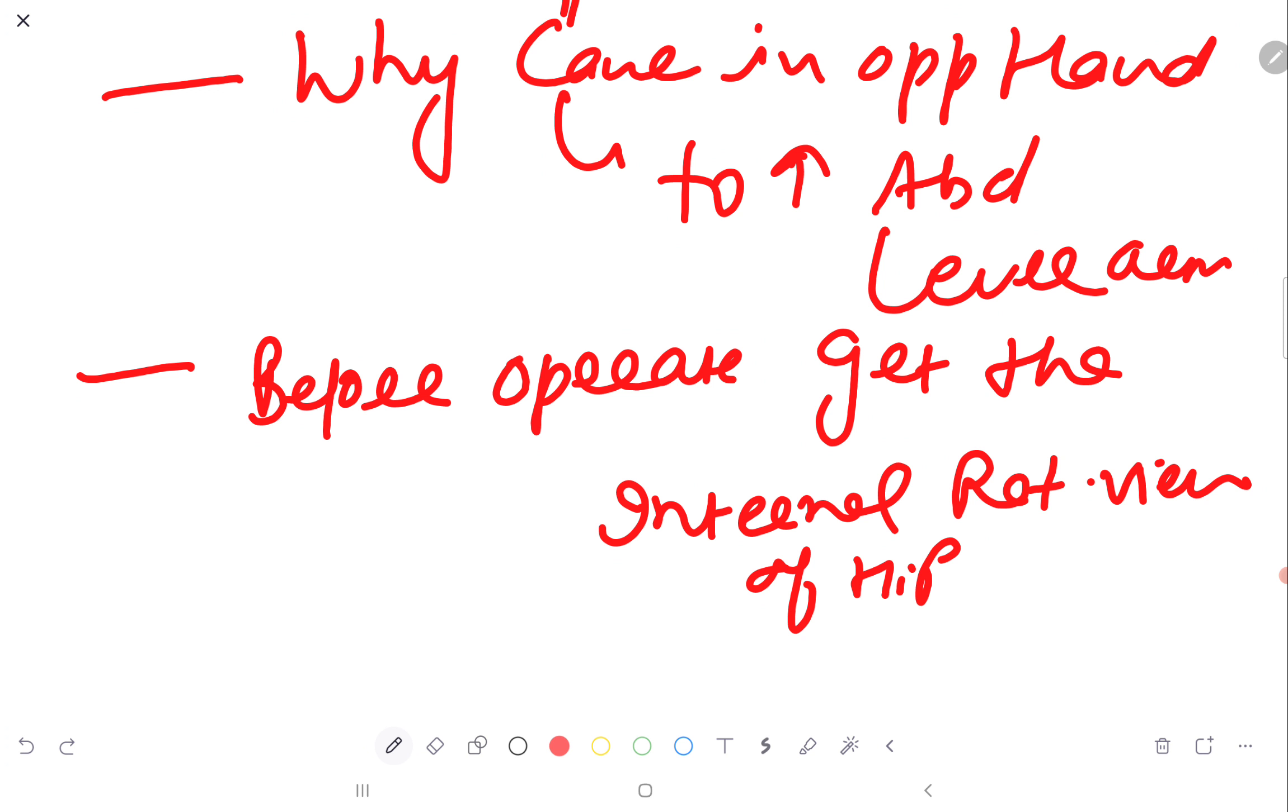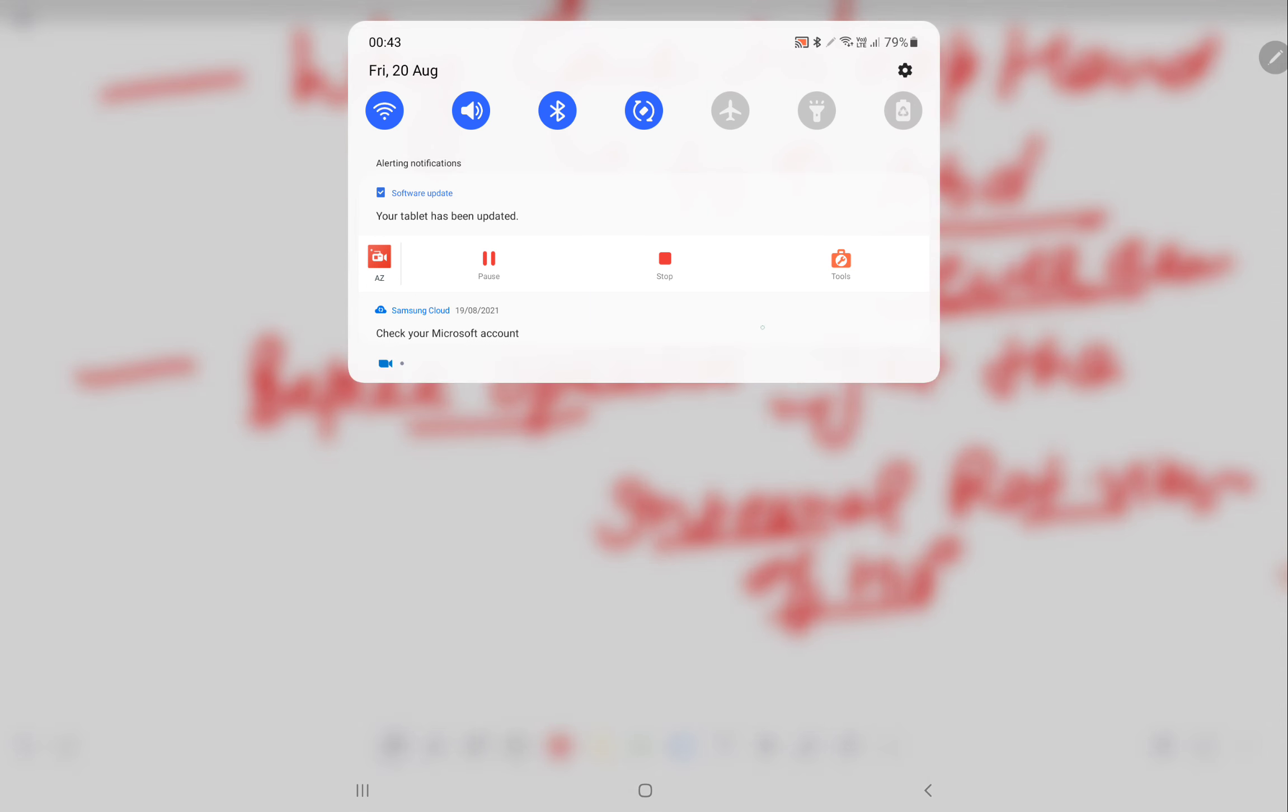Next is why do we hold cane in opposite hand? To increase the abductor lever arm. Before operating, always get the internal rotation view of the hip to get the true values.